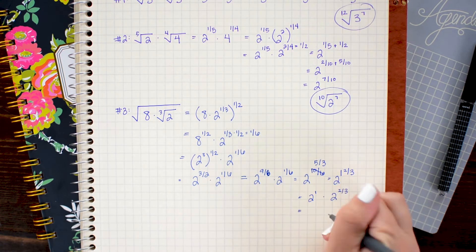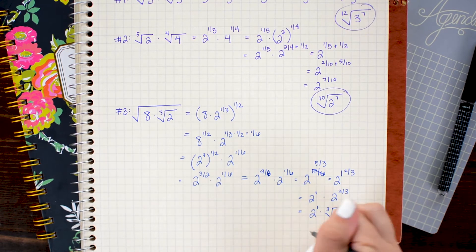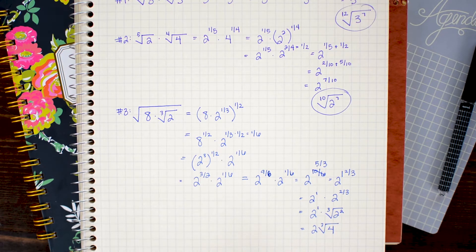Lastly all I need to do is reintroduce that radical notation. So I'll go ahead and introduce a cube root here. There we go, now we have simplified it down to 2 times the cube root of 4.